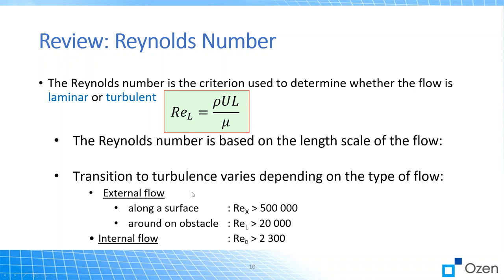We have threshold values for Reynolds number. For external flow along a surface, turbulent flow is characterized by Reynolds numbers greater than 500,000. For external flow around an obstacle, greater than 20,000. For internal flow, the transition occurs around 2,300 — below 2,300 indicates likely laminar flow, and above 2,300 indicates turbulent flow.